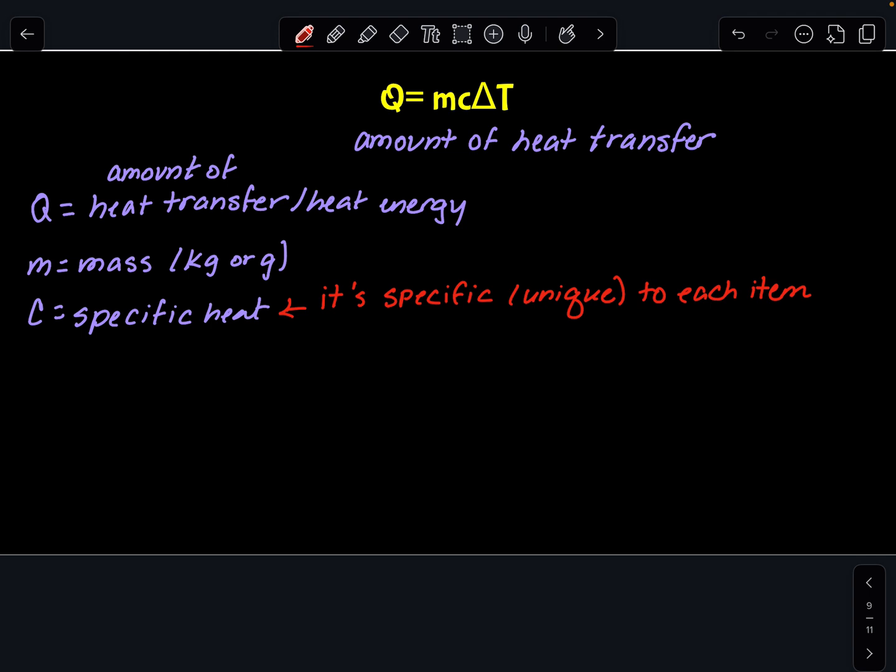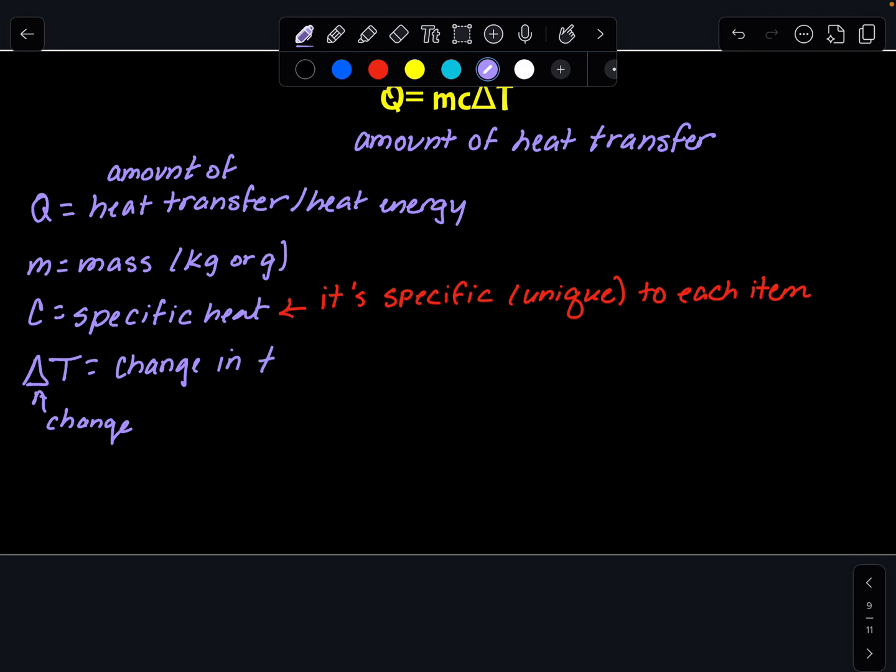And then our last variable is delta t. Now delta t, the delta means change. And so delta t is the change in temperature. And this is tricky because oftentimes you have to find or calculate the delta t value before you do the problem.